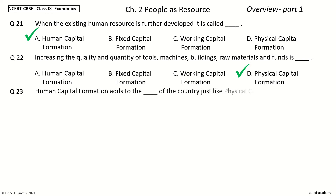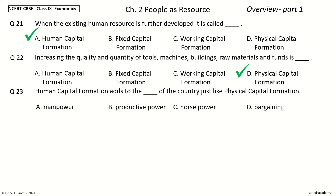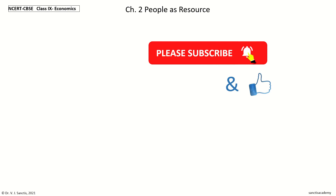Question 23: Human Capital Formation adds to the ___ of the Country, just like Physical Capital Formation. The options are: Man Power, Productive Power, Horse Power, Bargaining Power. And the answer is: Productive Power. So, Human Capital Formation adds to the Productive Power of the Country, just like Physical Capital Formation. In this video, we learned every point in the Section Overview Part 1. In the next video, we will learn every point in the Section Overview Part 2.